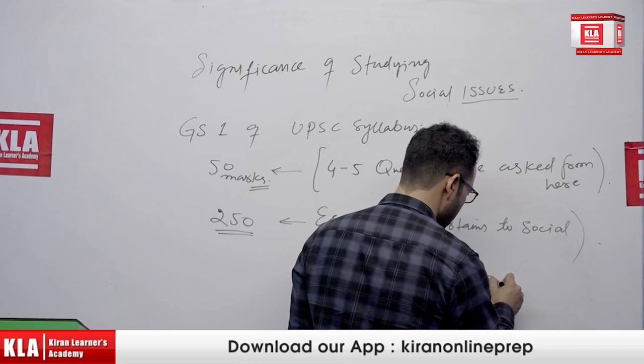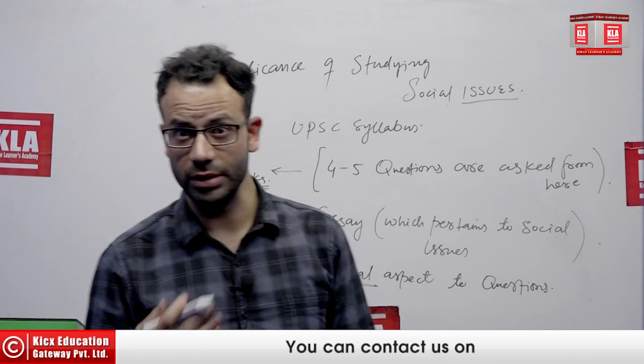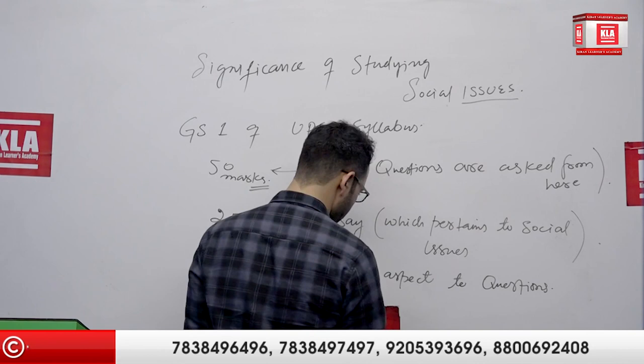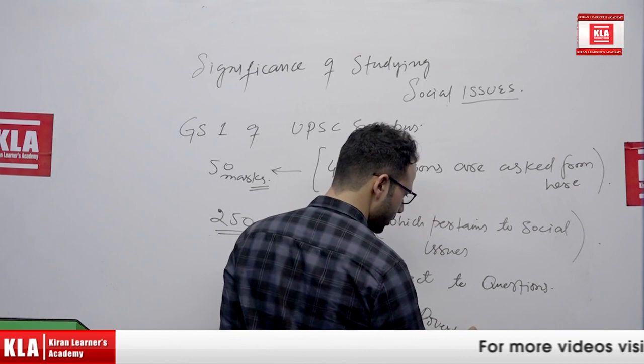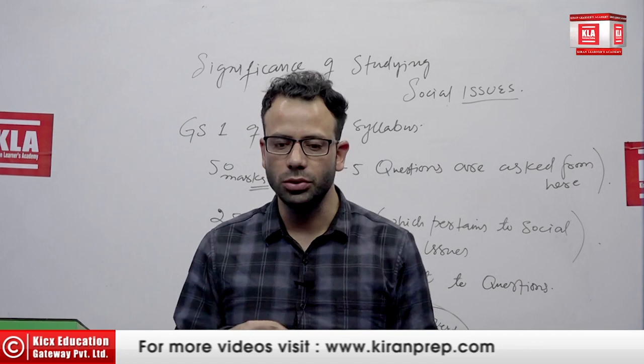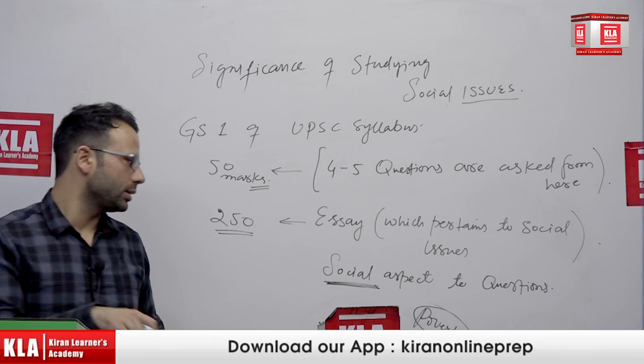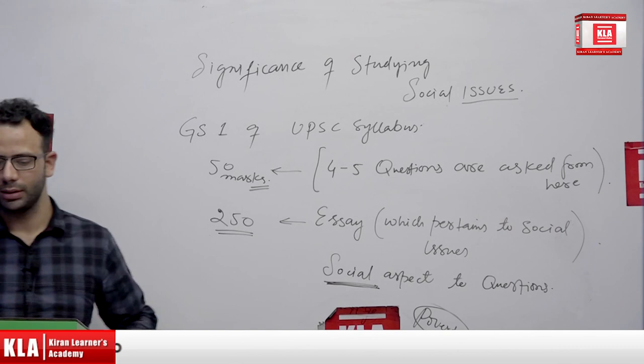Until you understand social issues, presenting that social aspect becomes difficult, whether it's Paper 2 or Paper 3. For example, if you're studying poverty in GS3, it surely has a social aspect as well as an economic aspect. For a comprehensive understanding, you need to know both. Here in social issues, you will try to understand the social aspect of it as well.